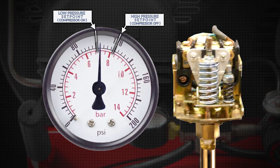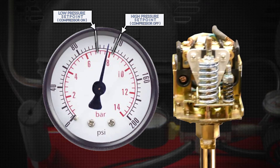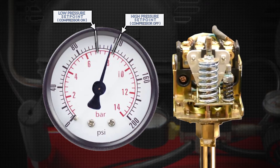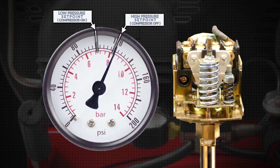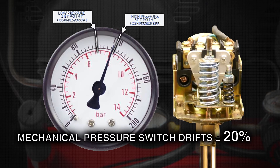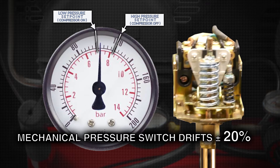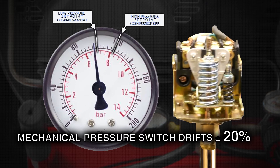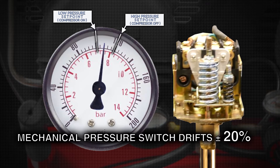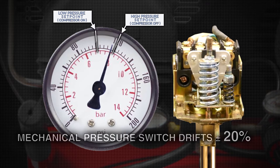Due to mechanical wear together with fluctuating environmental conditions, both the low and high set points drift over time, with estimates as high as 20 percent annually. If the pressure set points are not being checked and set daily, there can be a significant increase in energy consumption and operational cost. Unmonitored pressure can also be a safety concern.